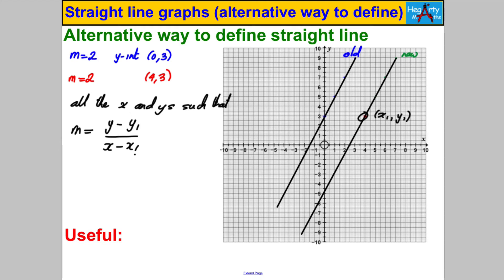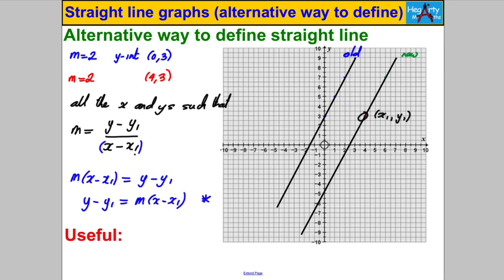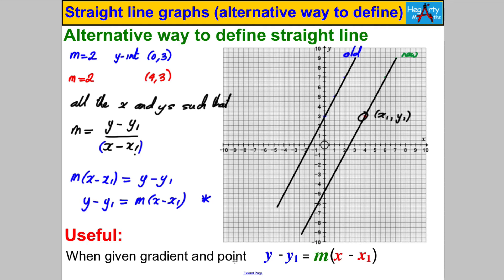I can rearrange this equation by multiplying both sides by (x − x₁), giving m(x − x₁) = y − y₁. Writing the y's on the left-hand side: y minus y₁ equals m(x minus x₁). That's the alternative formula for a straight line. It's really useful when we are given the gradient and a point on the line — it stops us having to find c and do some extra algebra. Now I'm going to work through some questions using y − y₁ = m(x − x₁) to show you how it's quicker.